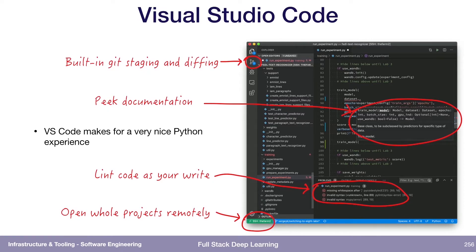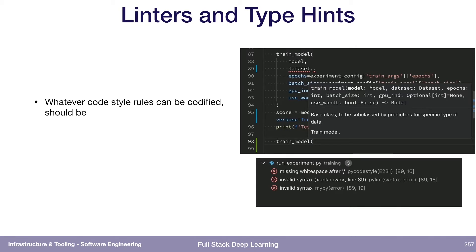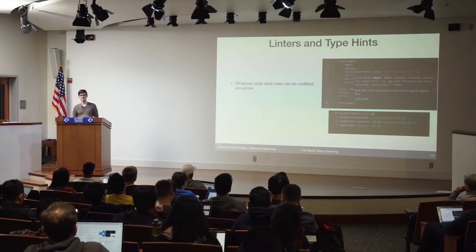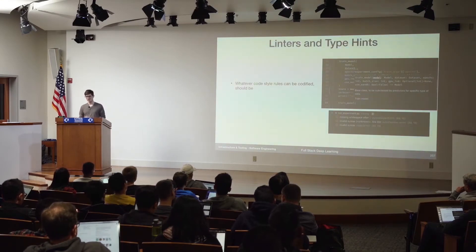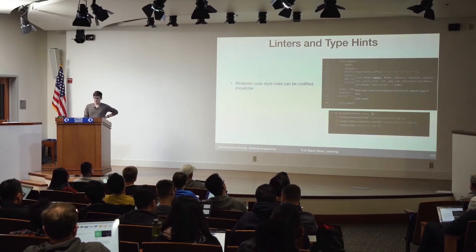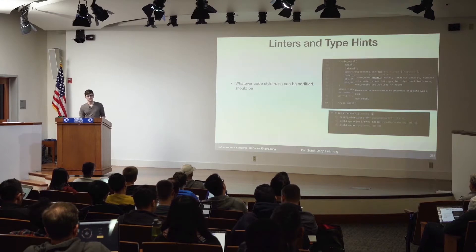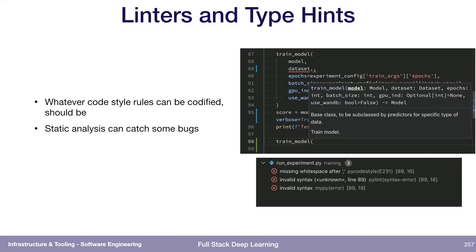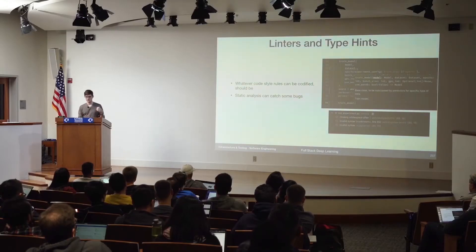You can lint code as you write, which I think is important. If you're a solo data scientist working in a notebook, you're hardly giving any thought to code style or potential mistakes that you might be making — that can be revealed through static analysis. But as you start working with a team and codifying your best practices, any code style rules that everyone should follow should be codified, automatically checked for, and ideally even automatically formatted. Static analysis can catch sources of bugs like syntax errors, and also if you call a function that expects three arguments but you call it with two. In Python you wouldn't catch that until you actually ran it, but with static analysis running in your code editor, you'll catch it as soon as you write it.